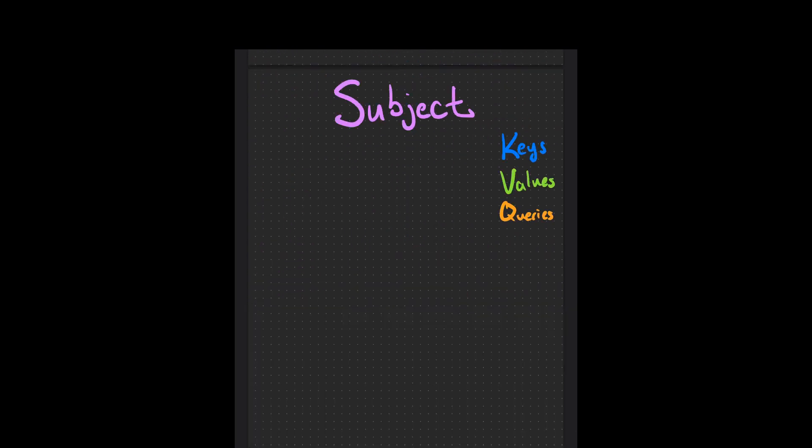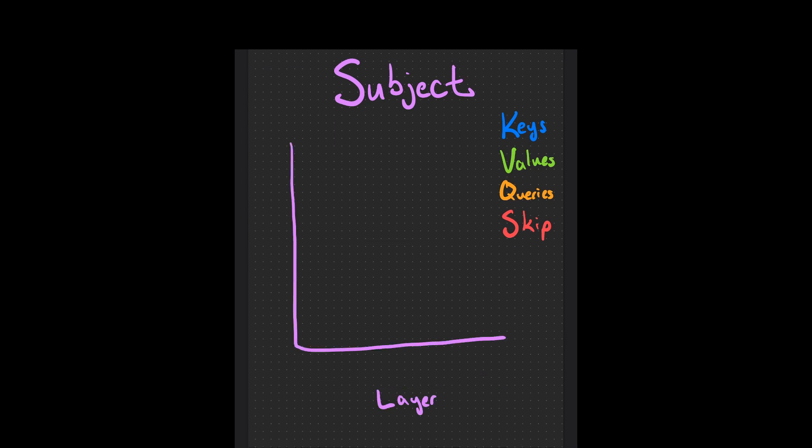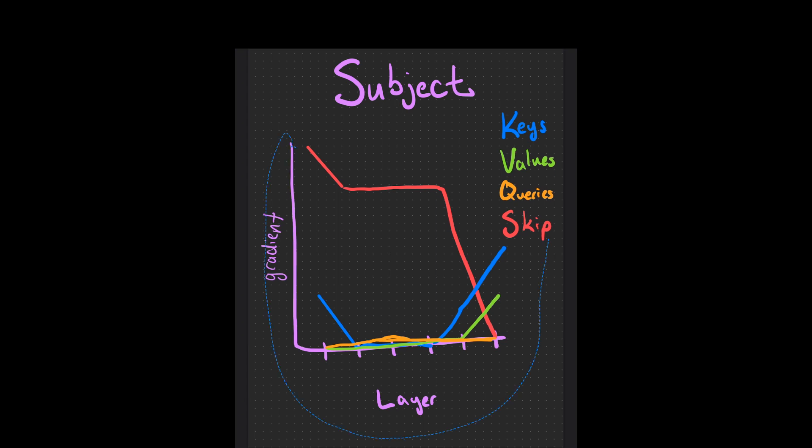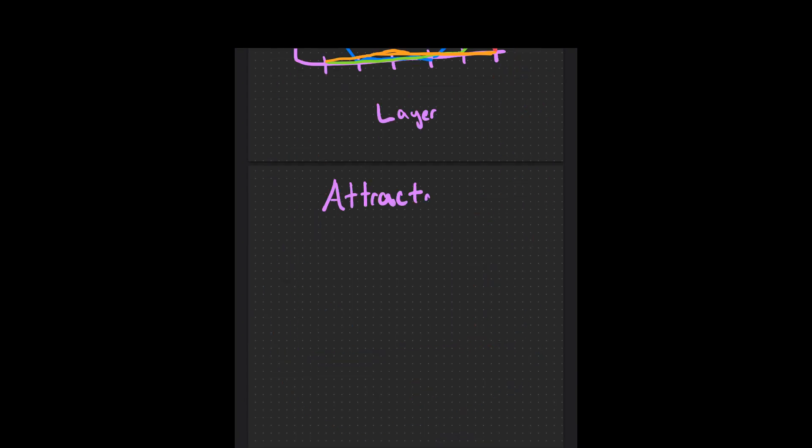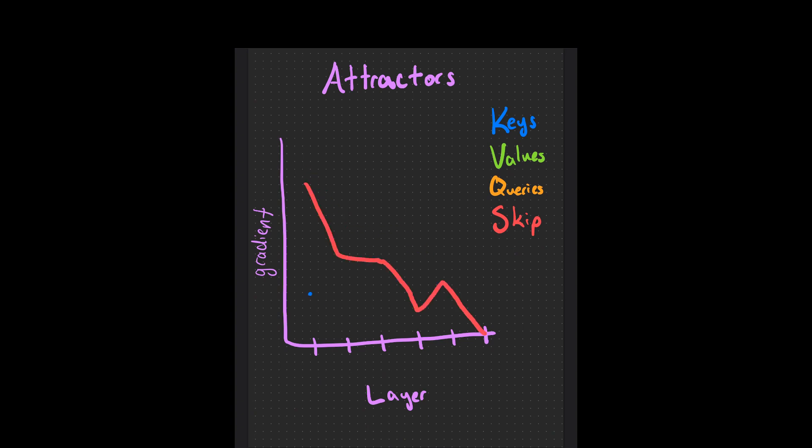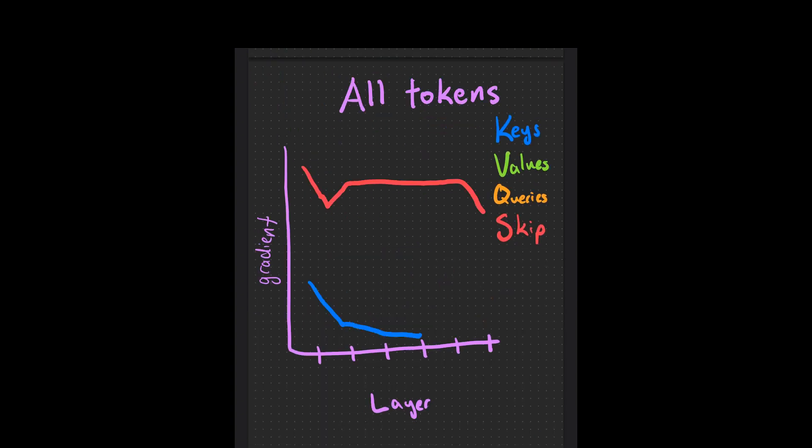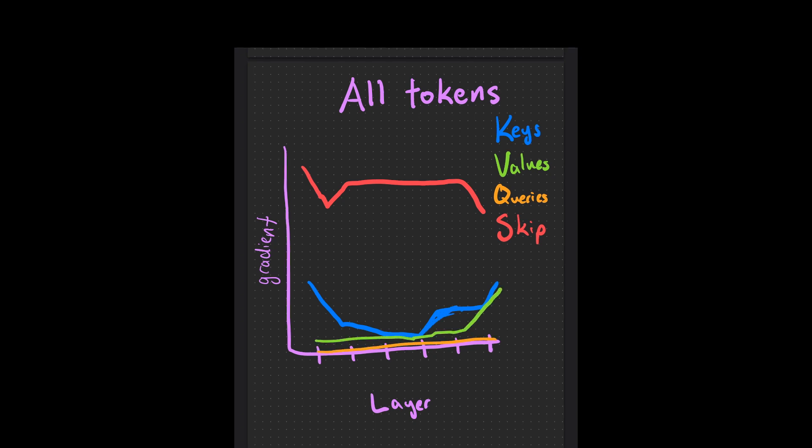Looking only at paths through the subject token at each layer, you find that the gradient flows mostly through the skip connection in earlier layers and the keys in the last. Now, if we think of SVA as another matching task where the answer depends on the subject, the keys being important actually kind of make sense. We see a similar but smaller pattern for attractors, i.e. non-subject nouns, and compared to the baseline of all tokens, we see that the previous pattern is very different. In the baseline, the skip connection is highest for all layers.